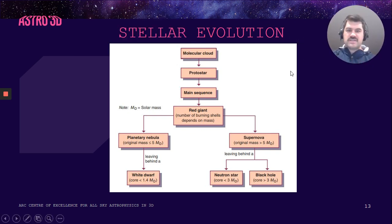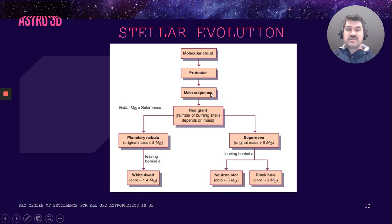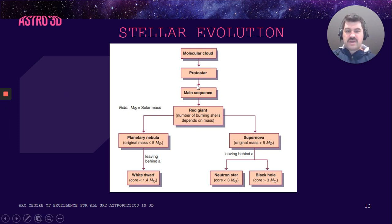To do this, we first need to consider stellar evolution — how stars evolve and how they're formed. Initially, stars are made in molecular clouds, in big nebulae, and these clouds condense under the force of gravity. Eventually something called a protostar forms, before thermonuclear fusion has started. Once thermonuclear fusion starts, the star becomes a main sequence star, fusing hydrogen into helium. At the end of the star's main sequence life, it'll become a red giant, burning and fusing lots of different elements in different shells.